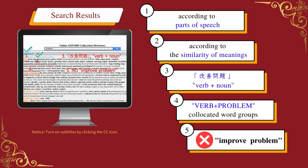The search results are presented as follows: one, they are classified according to parts of speech; two, they are divided into different groups according to similarity of meanings; three, taking a Chinese term as an example, it is a combination of verb plus noun; four, we look for verb plus 'problem'; five, the search results show that there is no collocation of 'improve problem', which means this form of collocation does not exist.